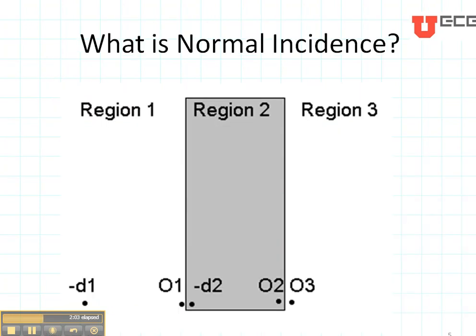Now what is normal incidence? Normal incidence is when the plane wave is propagating and it comes in normal to the boundary condition that you're interested in. So for instance, let's suppose that we had region number one is air, region number two is skin, and region number three is muscle.